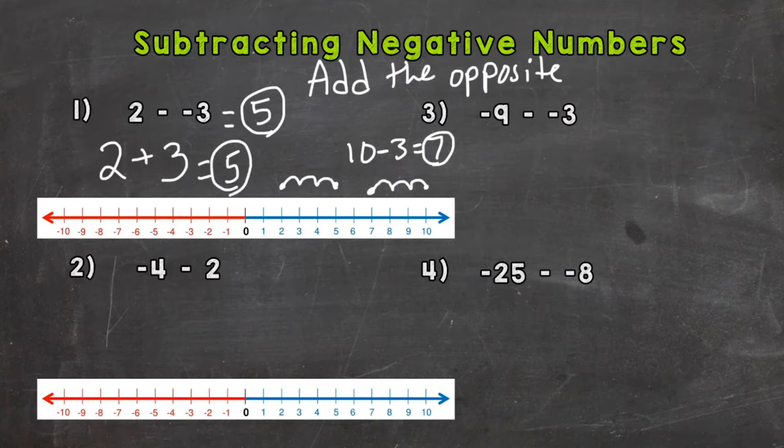When you add the opposite, make sure you don't just change this to addition — that completely changes the problem. In order to switch it to addition, you also have to use the opposite of that second number in the problem. So let's go to number two and add the opposite first.